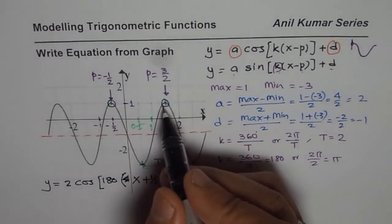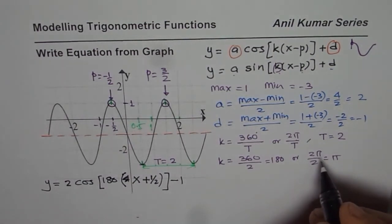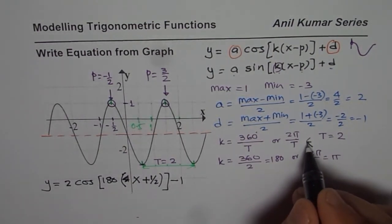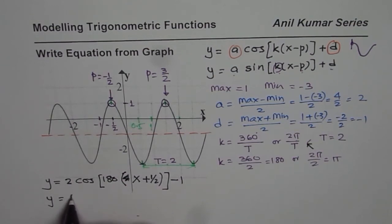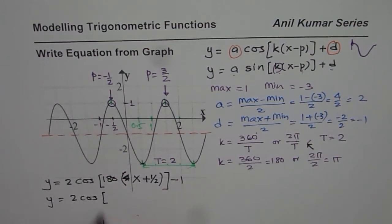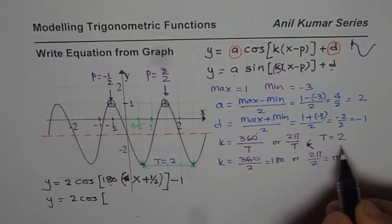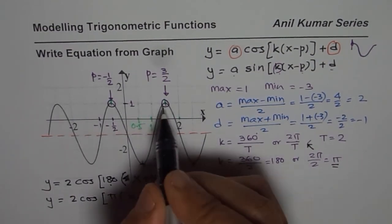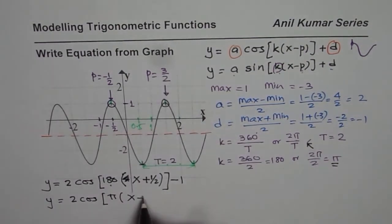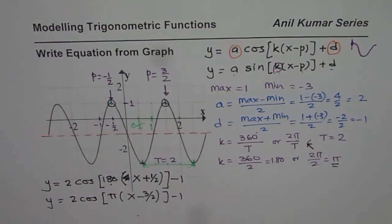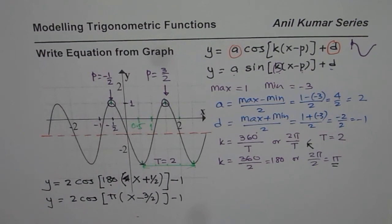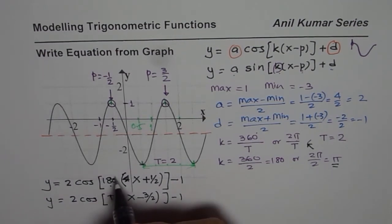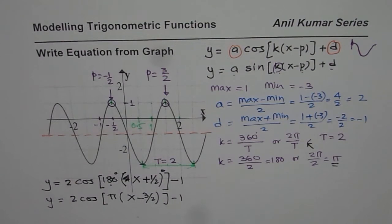Now let me use this point and write the second equation. This time I will write it in radians. I hope you are not getting confused. 2 cos, everything else is same. k value, we are putting the radian value which is π. π, x, and the phase shift we are using 3 by 2. 3 by 2 minus 1. Both are correct equations, degrees and radians. Let me put degrees here for the first one and radians for the second one. I hope that makes a lot of sense to you.